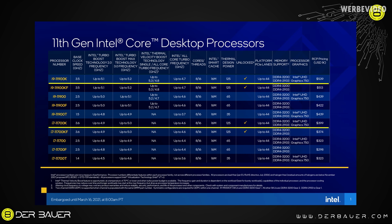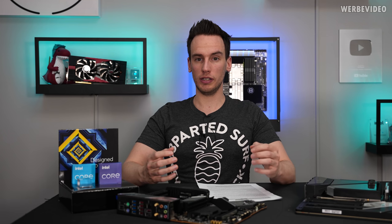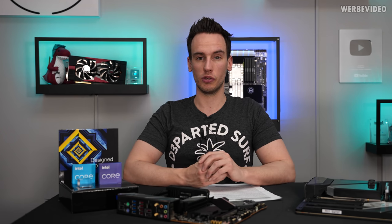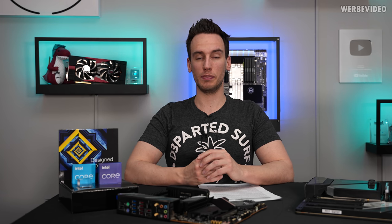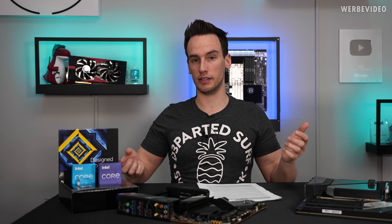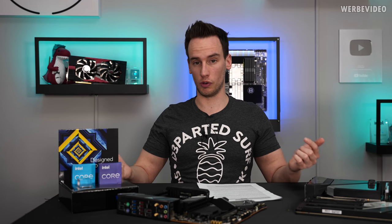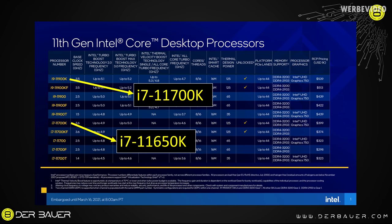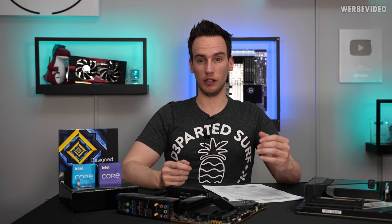The 11700K is artificially crippled versus the 11900K in terms of clocks and boost function, and obviously due to binning the 11700K will reach lower clocks in overclocking. To me personally, the i9 11900K simply does not deserve to be called an i9, because there is pretty much no difference to the i7, and the previous generation had two more cores. I think it would have been more suitable to rename the 11700K to 11650K and rename the 11900K to 11700K.